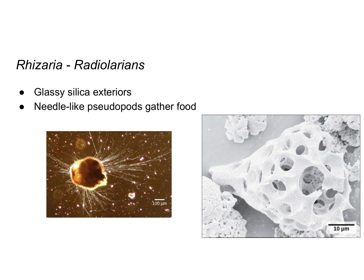Looking at the radiolarians, you can see here the test, or shell, of one that is dead. You can see these needle-like pseudopods sticking out of the holes or pores in the test. These pseudopods allow the protist to be mobile — to move around in its environment — and are also a way for the protist to reach out and grab food to bring into the main cell.